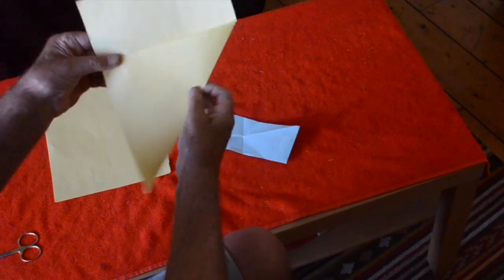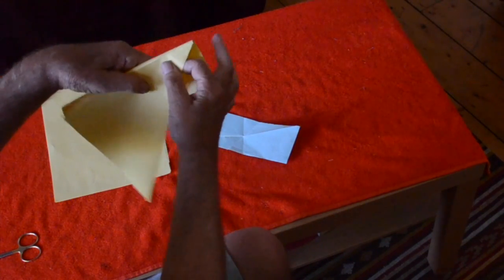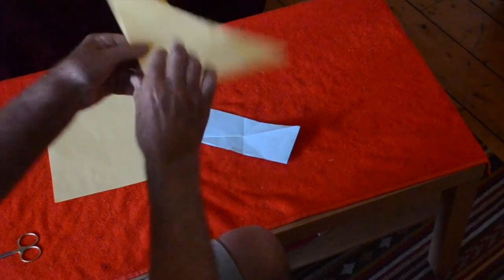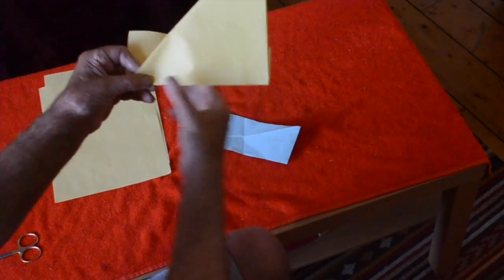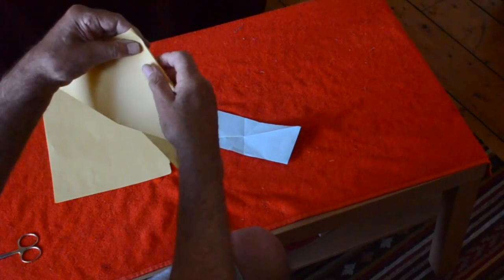So if you need a square for origami, the way you normally do it is to fold one corner down like this to touch the side to make the square. You've got a diagonal there and then you have to cut off the strip at the bottom.